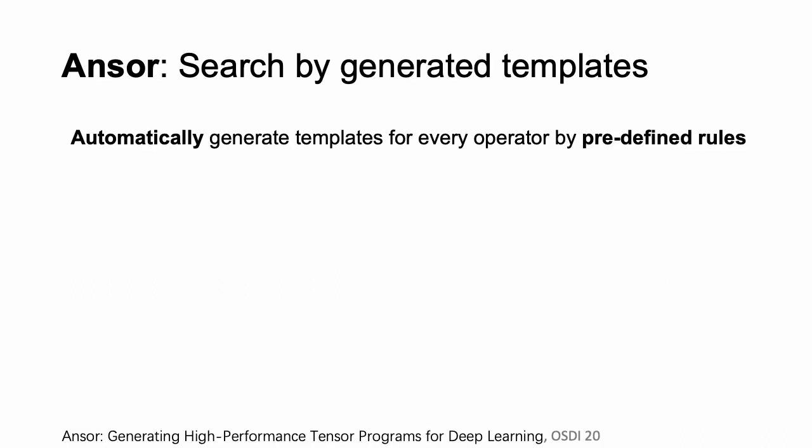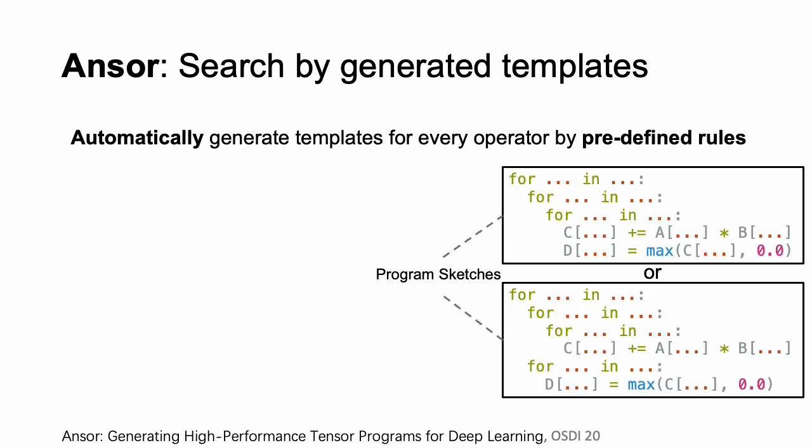Answer can generate scheduled templates automatically with predefined schedule generation rules. It can generate multiple high-level program structures, which results in a larger search space than TVM. It also proposes an efficient genetic algorithm to explore the new search space.